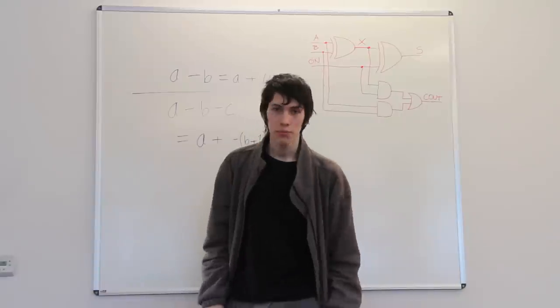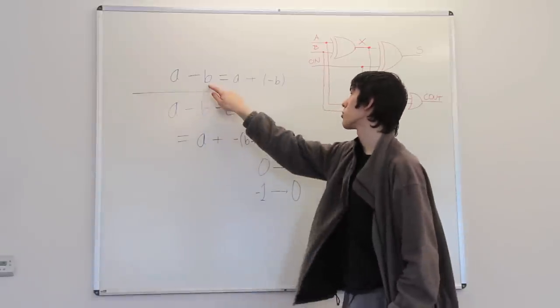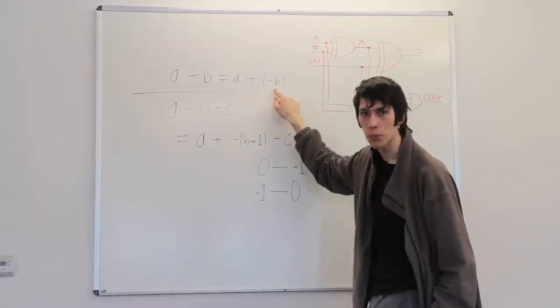Right, so Onway has explained Rihanna, and using that we can make a subtraction. So as you know, we can do subtraction by adding the negative equivalent of a number.